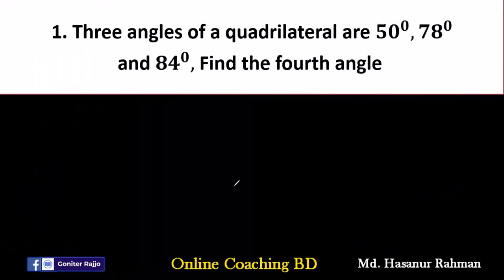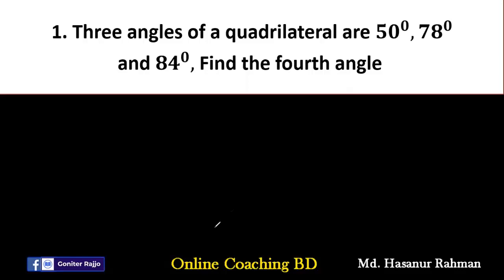Number 1 says 3 angles of a quadrilateral are 50 degrees, 78 degrees, and 84 degrees. Find the 4th angle. A quadrilateral has 4 sides and 4 angles.